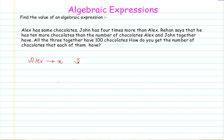Now let's talk about John. He has four times more than what Alex has. So John will be multiplying what Alex has by four to get the number of chocolates John has, giving us 4x.